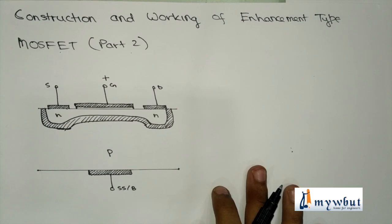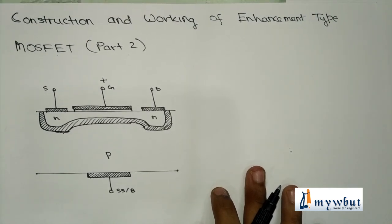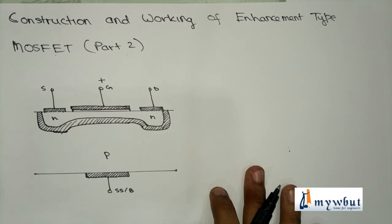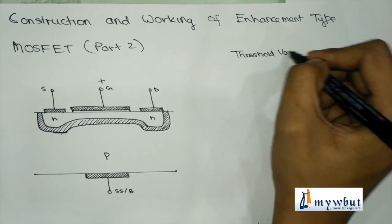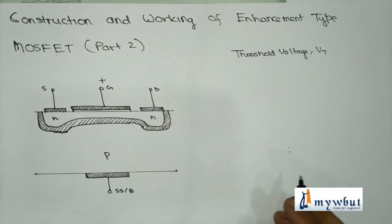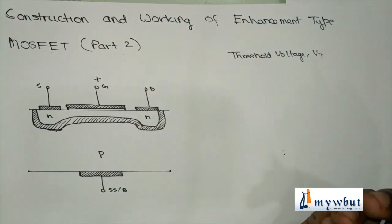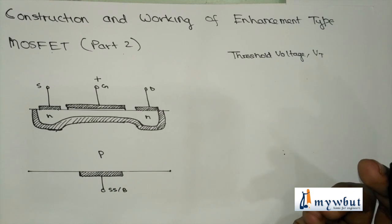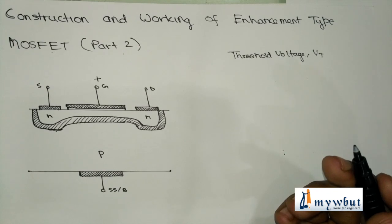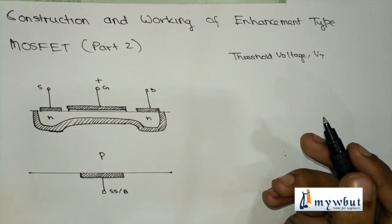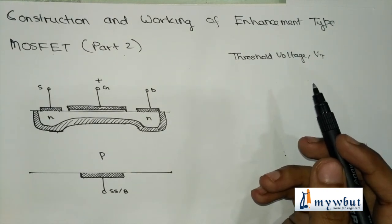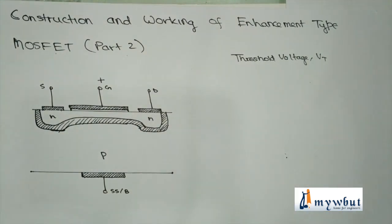This is how a channel is formed in the enhancement type MOSFET. On increasing VGS, the width of the channel increases. Now we need to understand the concept of threshold voltage VT. Threshold voltage is the value of VGS for which there is a significant increase in the drain current — in other words, the minimum value of VGS for which current is able to flow from drain to source.